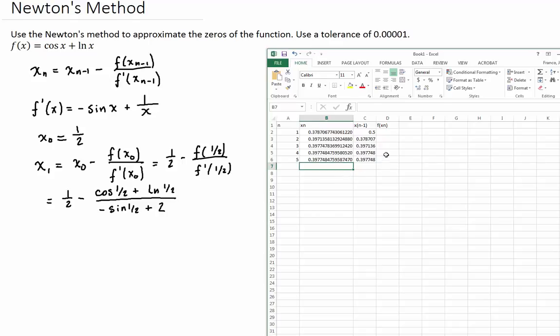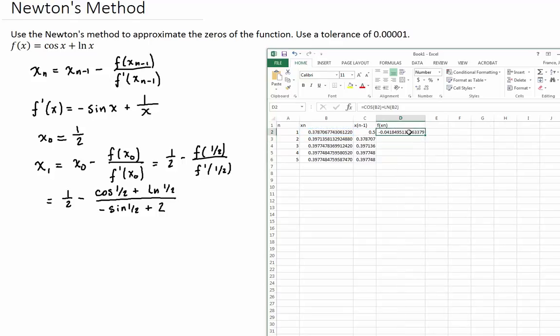So let's calculate what the function would be, just to see how it's getting closer and closer to zero. So let's do the function is cosine. Instead of x, I'm going to grab xn, so that cell B2, so cosine plus the natural log of that. You see, we're not that close to zero at first, and then we go closer and closer, up until, I mean, in the last iteration, Excel doesn't recognize how many float points, it doesn't recognize it as anything different than zero.